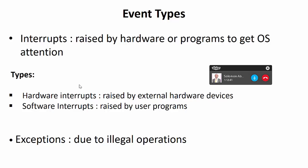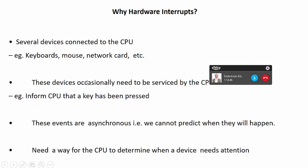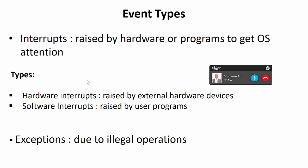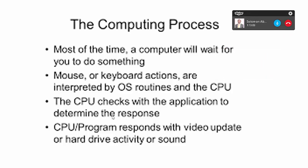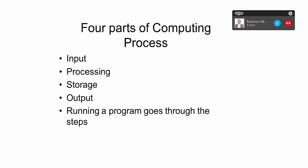Moving to slide 6 — computing processes: most of the time, the computer waits for you to do something, like clicking a mouse or keyboard actions, which are interpreted by the operating system routines. The CPU checks the application to determine the response. On slide 7, there are four parts of the computing process: inputs, processing, storage, and outputs. The program runs through these steps.